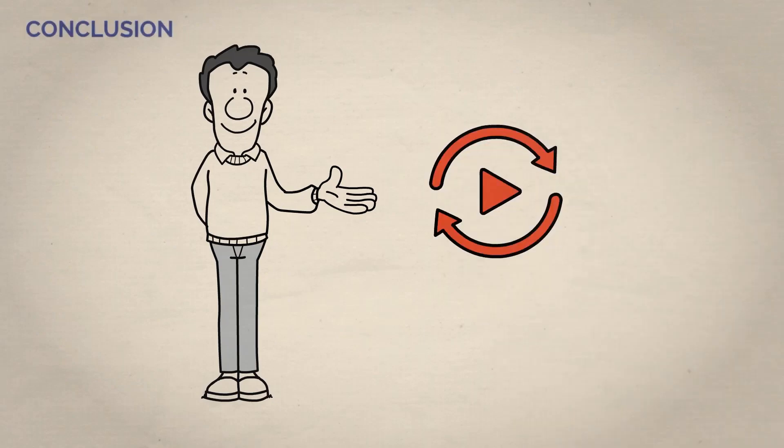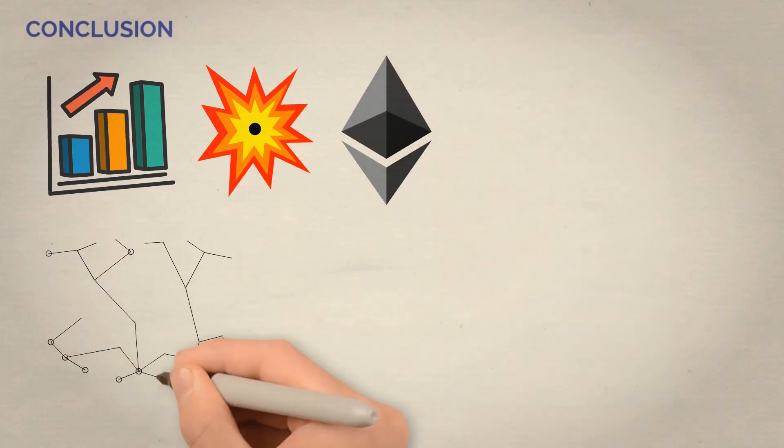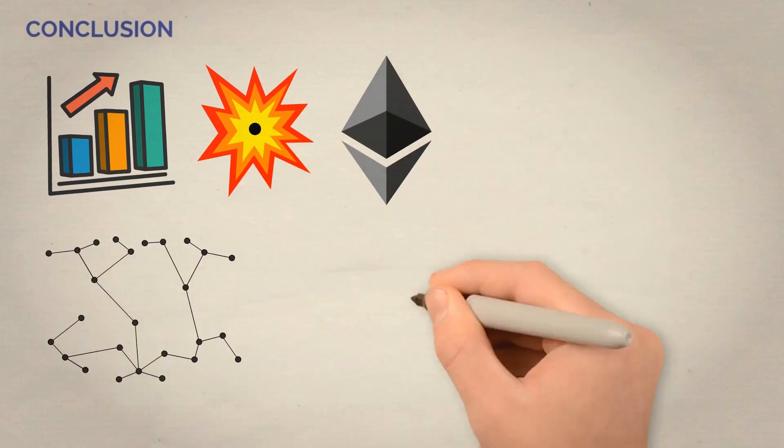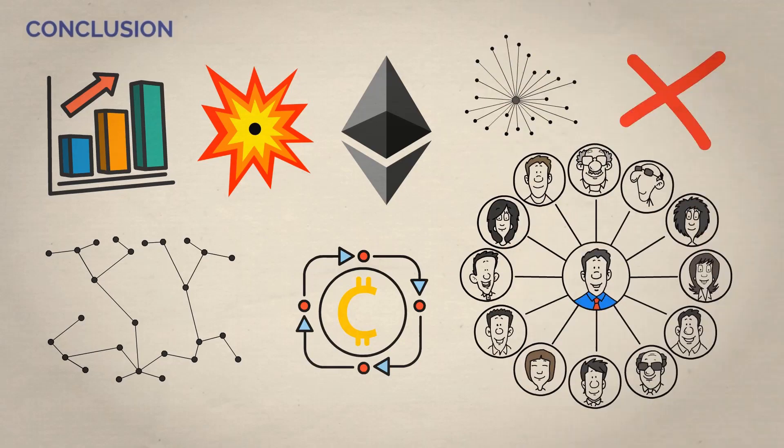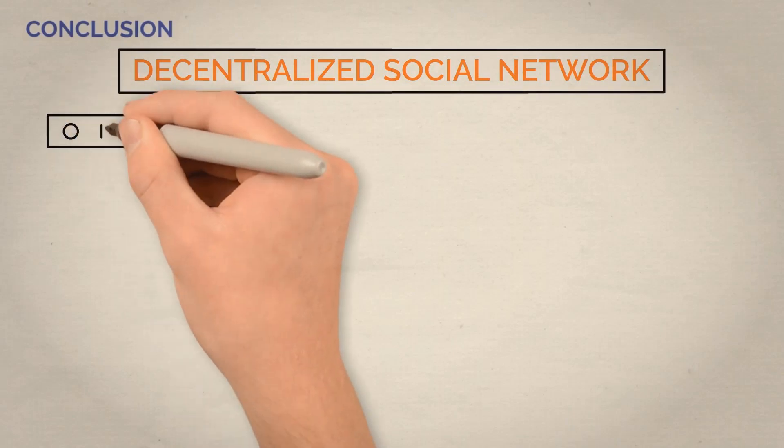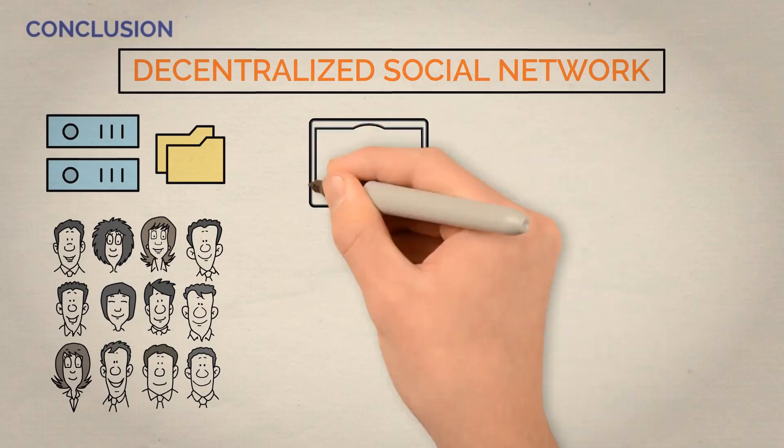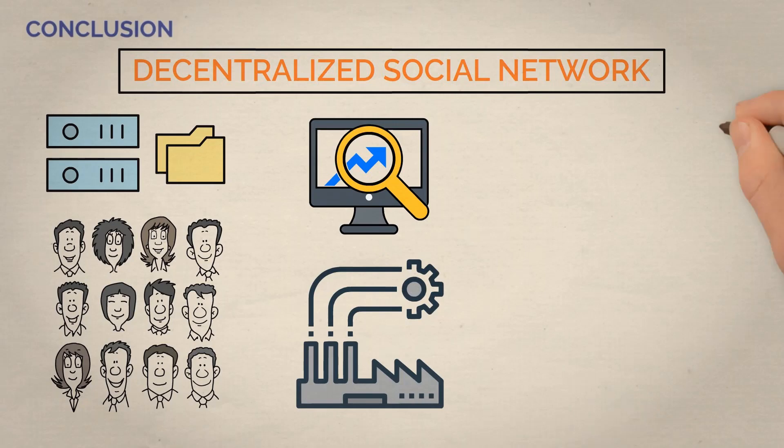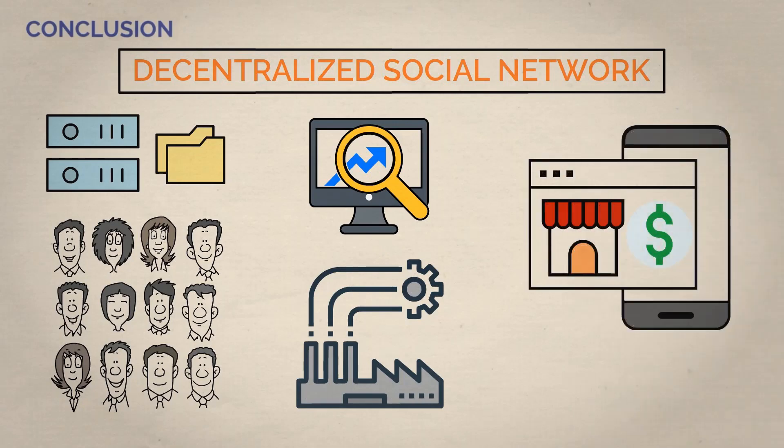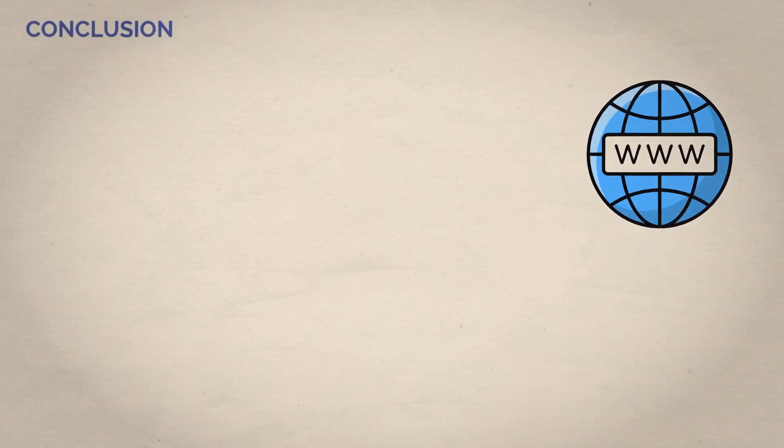Now let's do a quick recap. The potential of Ethereum is truly mind-blowing. Think about it. With Ethereum, you can create a decentralized marketplace where buyers and sellers can conduct transactions directly without needing a centralized authority. You can also create a decentralized social network where users own and control their own data. The possibilities are endless. But it's not just about the potential for new and innovative applications. Ethereum is also set to disrupt traditional industries and business models. It's going to disrupt the way we think about finance, healthcare, and even voting.